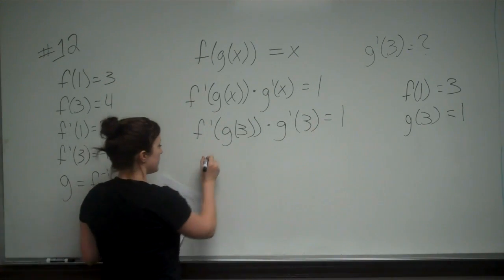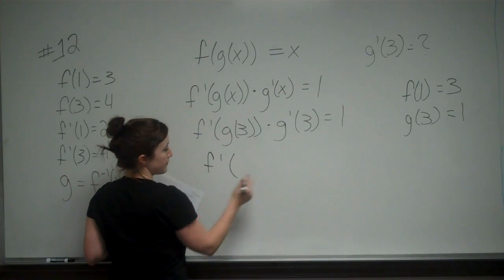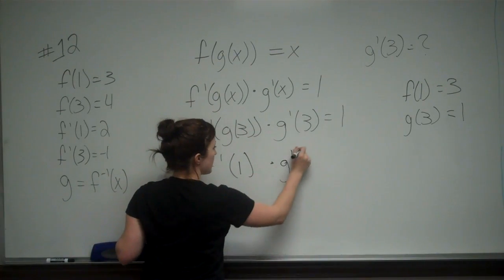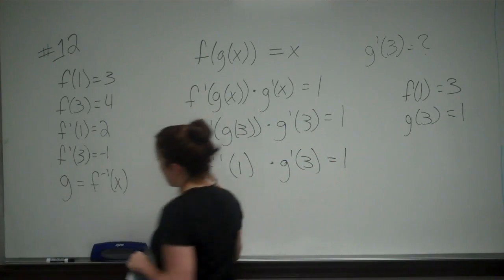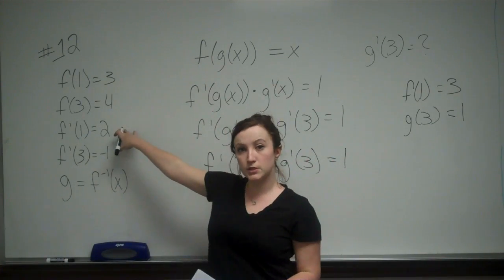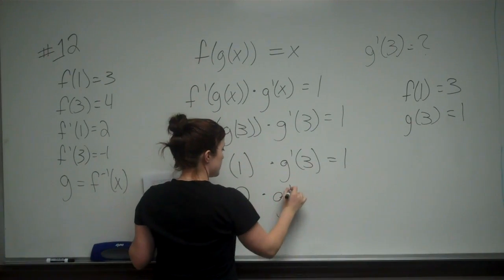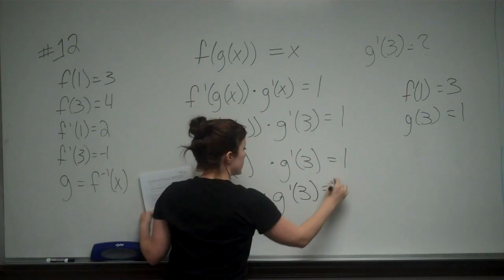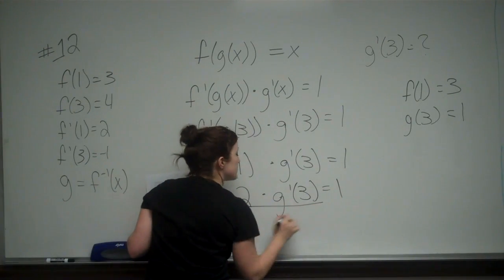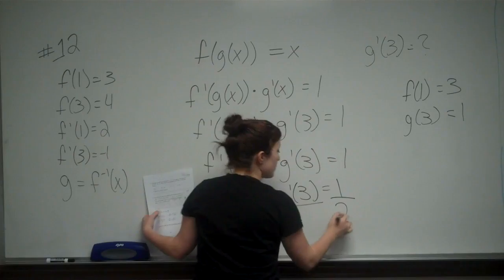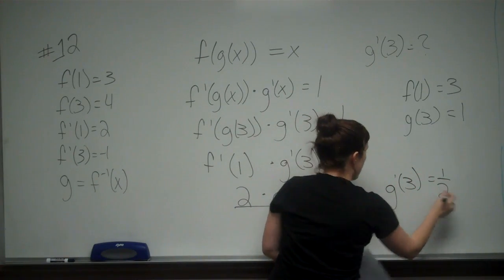So we can plug that in. So we know that f prime of g of 3, we know g of 3 is 1, times g prime of 3 is equal to 1. Well, it gives us that f prime of 1 is equal to 2. So we have 2 times g prime of 3 is equal to 1, so I'm just looking to solve for g prime of 3. So I divide both sides by 2, and I get that g prime of 3 is equal to 1 half, and that answer is e.